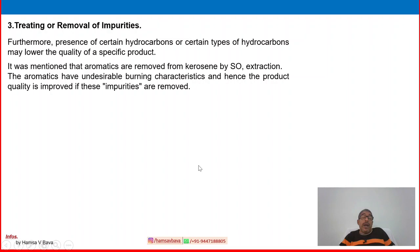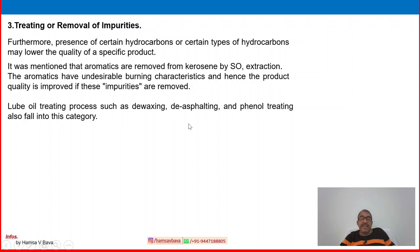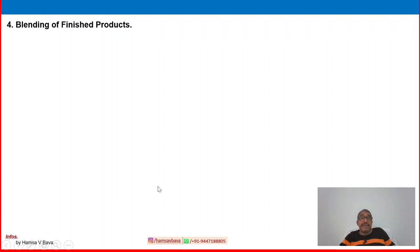Alternatively, removal may be carried out by converting unwanted compounds to more readily removable forms, as done in hydro-desulfurization of diesel fuel. All sulfur, lead, heavy metals, water, and other impurities will be removed from the product in various stages. Furthermore, the presence of certain types of hydrocarbons may lower the quality of specific products — for example, aromatics such as benzene and toluene are removed from kerosene by solvent extraction. Lube oil treating processes such as de-waxing, de-asphalting, and phenol treating also fall into this category.